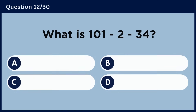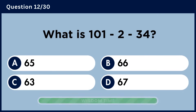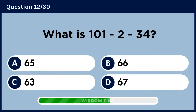What is 101 minus 2 minus 34? Answer D, 14. Answer A, 65.